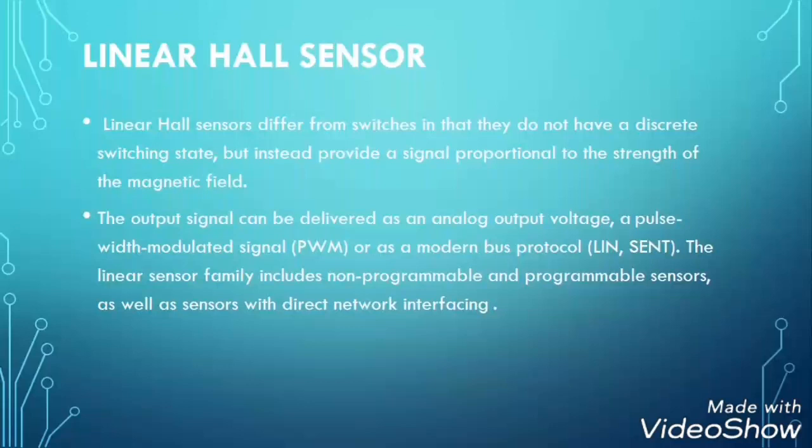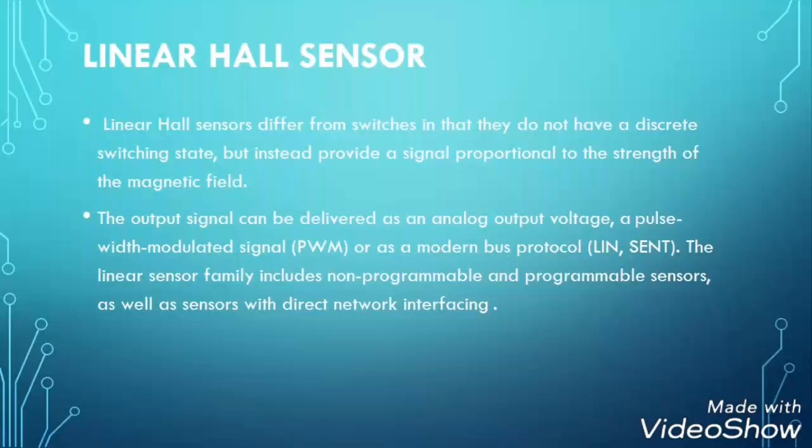Hall effect sensor is also available as a linear type. Linear Hall sensor differs from the switching Hall effect sensor. It does not have a discrete switching state, but it provides a signal proportional to the strength of the magnetic field. The output signal can be delivered as an analog output voltage. The linear Hall sensor family includes ratiometric and other sensor types.